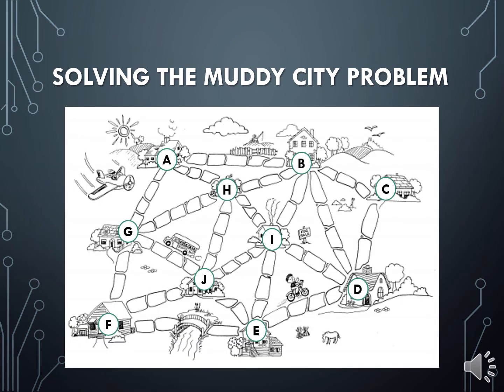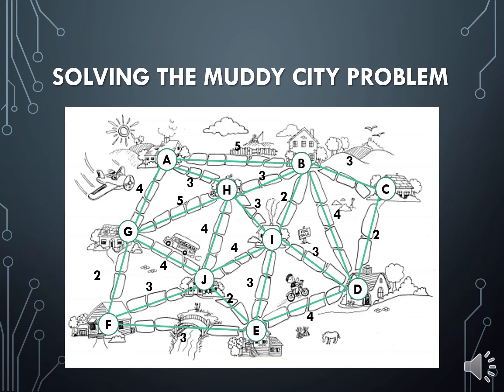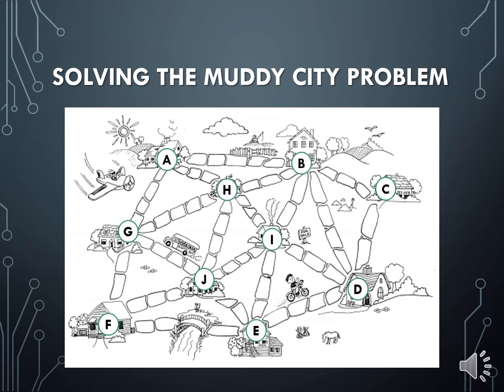Let's go ahead and represent the Muddy City problem as a connected graph and assign weights to each of the edges. Using the steps in Kruskal's algorithm, we can start choosing edges of minimum weight. First, let's choose any edge with the lowest weight, which in this case is 2. Here, we choose the edge FG. Next, we choose the remaining edges with weight equal to 2 in the following order: BI, EJ, and CD.